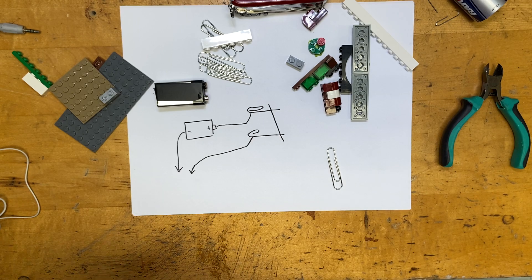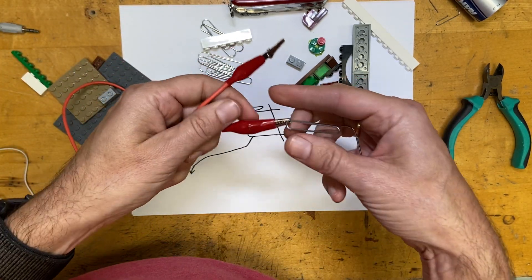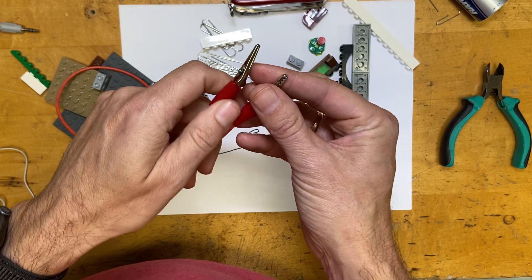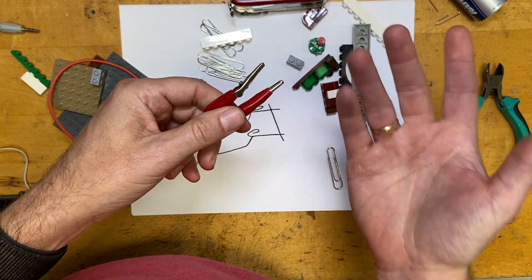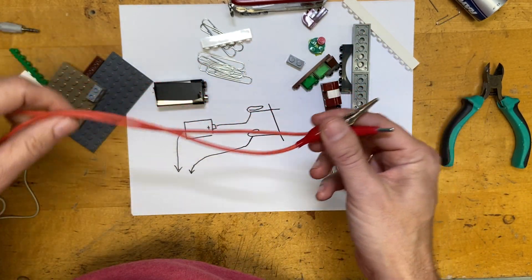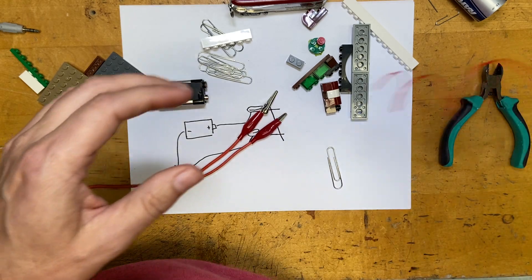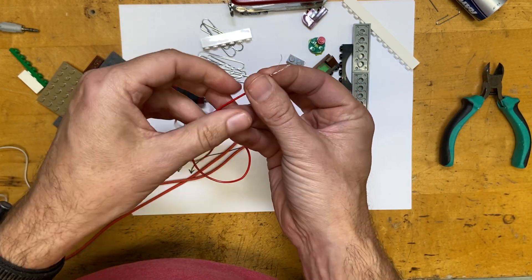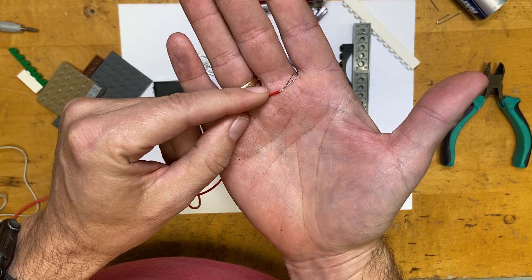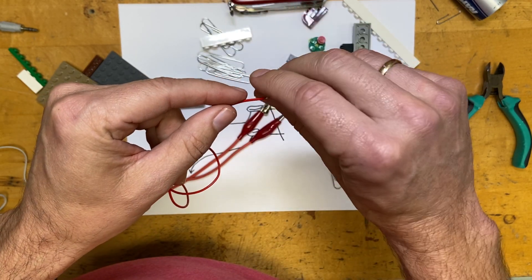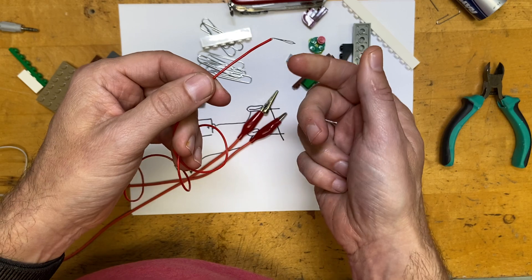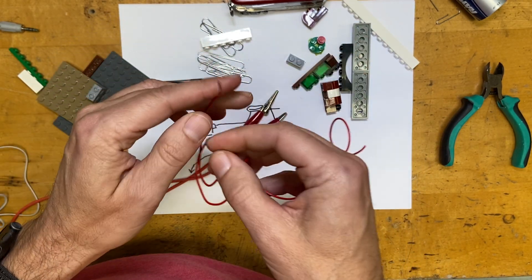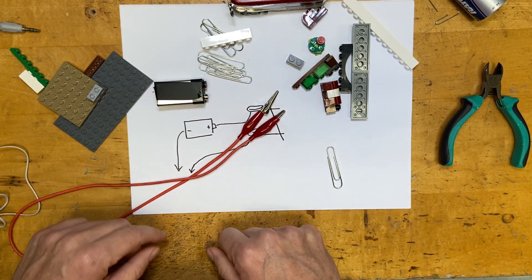I am using these alligator clip wires because they're super quick and I don't want to take a long time. If you don't have those and you don't want to use those, that's fine. You can use normal wire. You have to cut and strip off the plastic and then you would have to wrap this around the paperclips or solder it on there, but it takes a lot longer. I'm just going to use these clip wires.